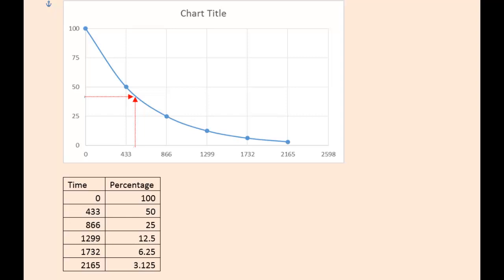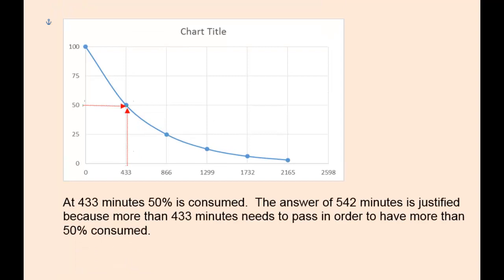Here's the table I used to generate this curve, and estimating where 42 percent would be, we can see that the time associated with 42 percent is approximately to the time we calculated using the first-order rate equation. Another way to think about this is that 433 minutes, 50 percent is consumed. So the answer of 542 minutes is justified because more than 433 minutes needs to pass in order to have more than 50 percent consumed.